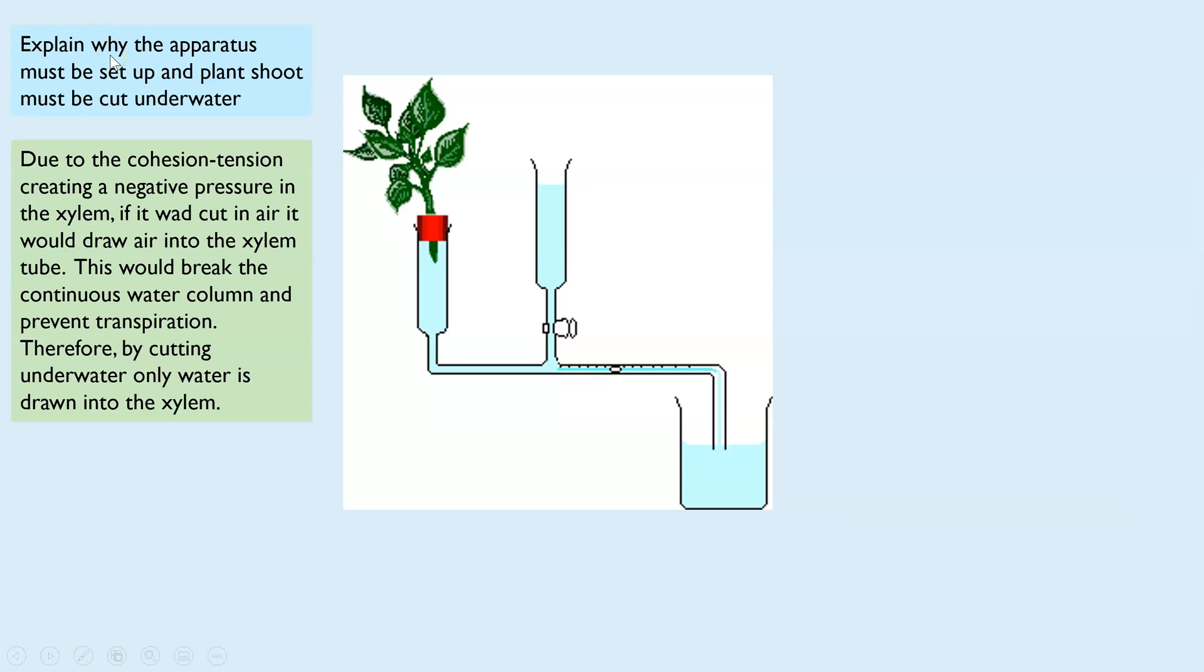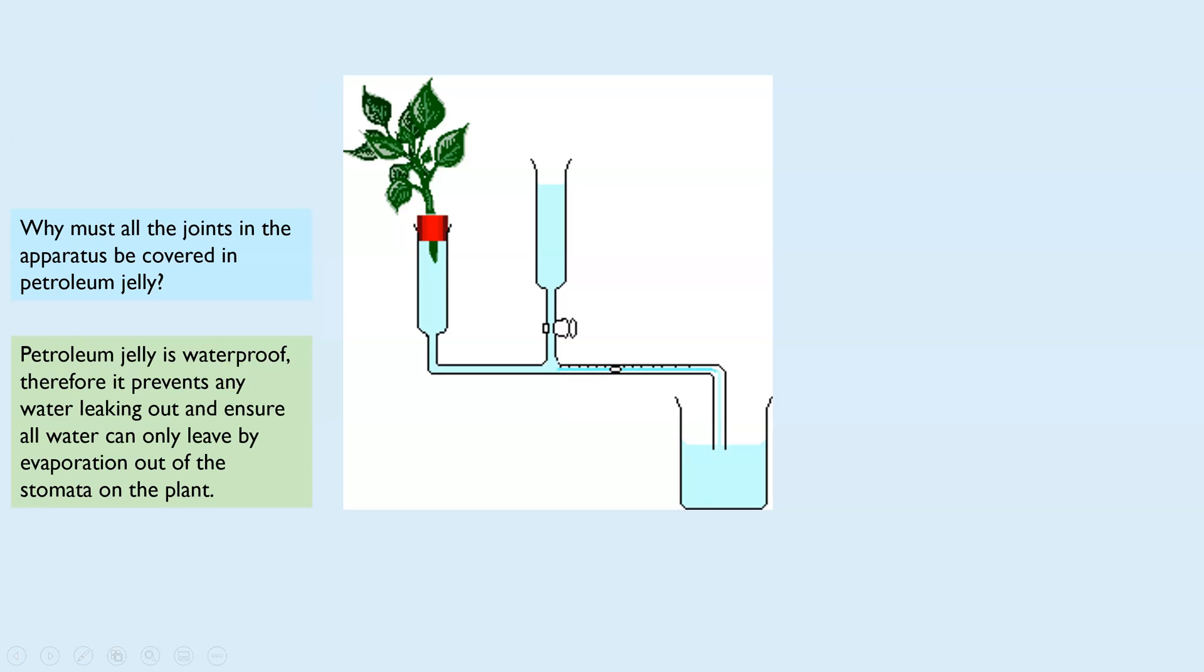The first one was: explain why the apparatus must be set up and the plant shoot must be cut underwater. This is what I was saying—it's due to that cohesion tension theory. It creates a negative pressure in the xylem, so it's constantly pulling up the water. If it was cut in the air, it would draw air into the xylem instead, and that would break that continuous water column and prevent transpiration. So instead, you have to cut it underwater to make sure no air bubbles are introduced into the xylem.